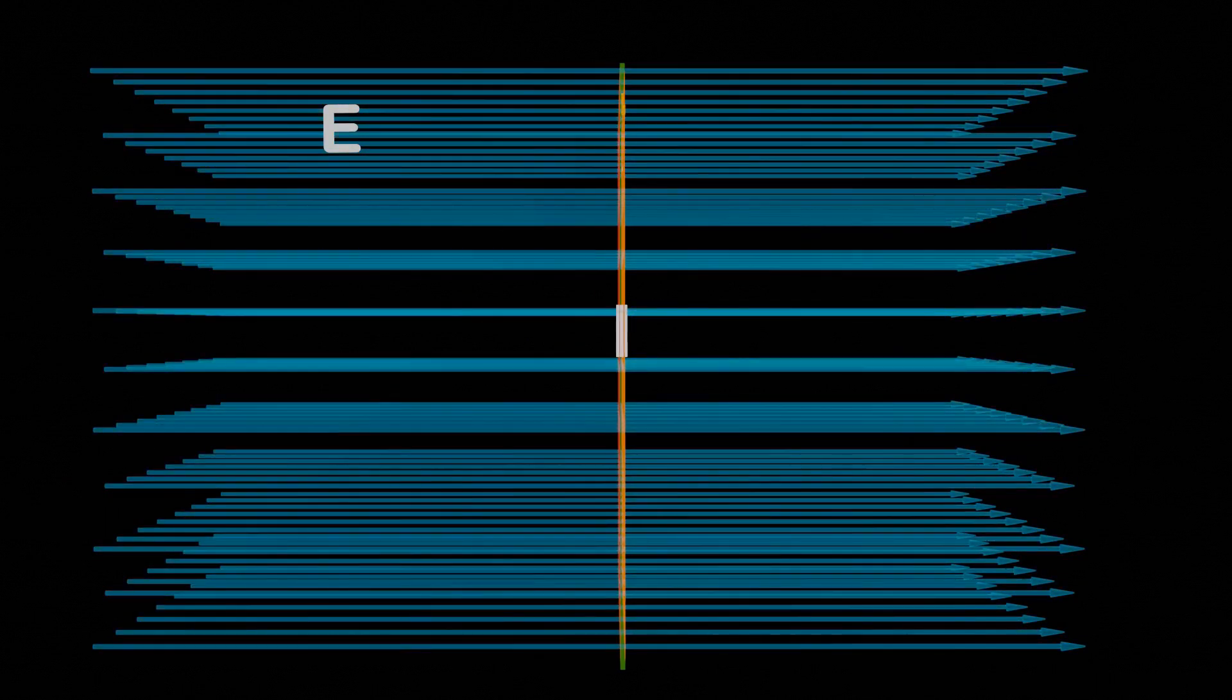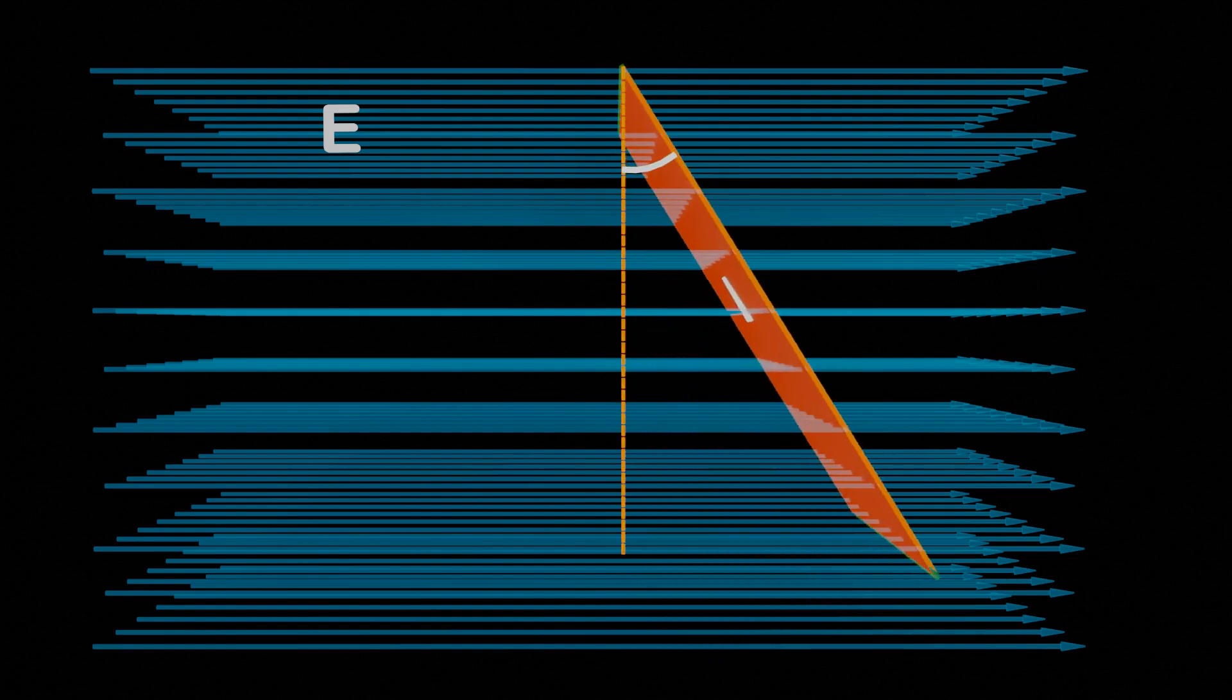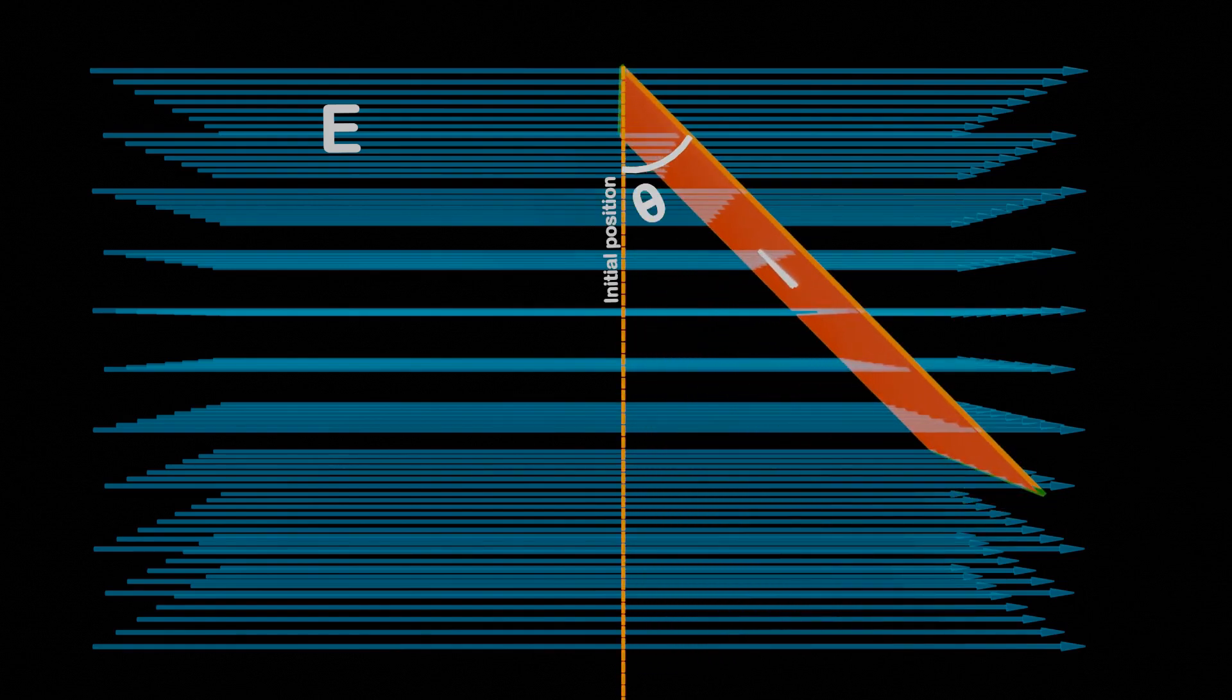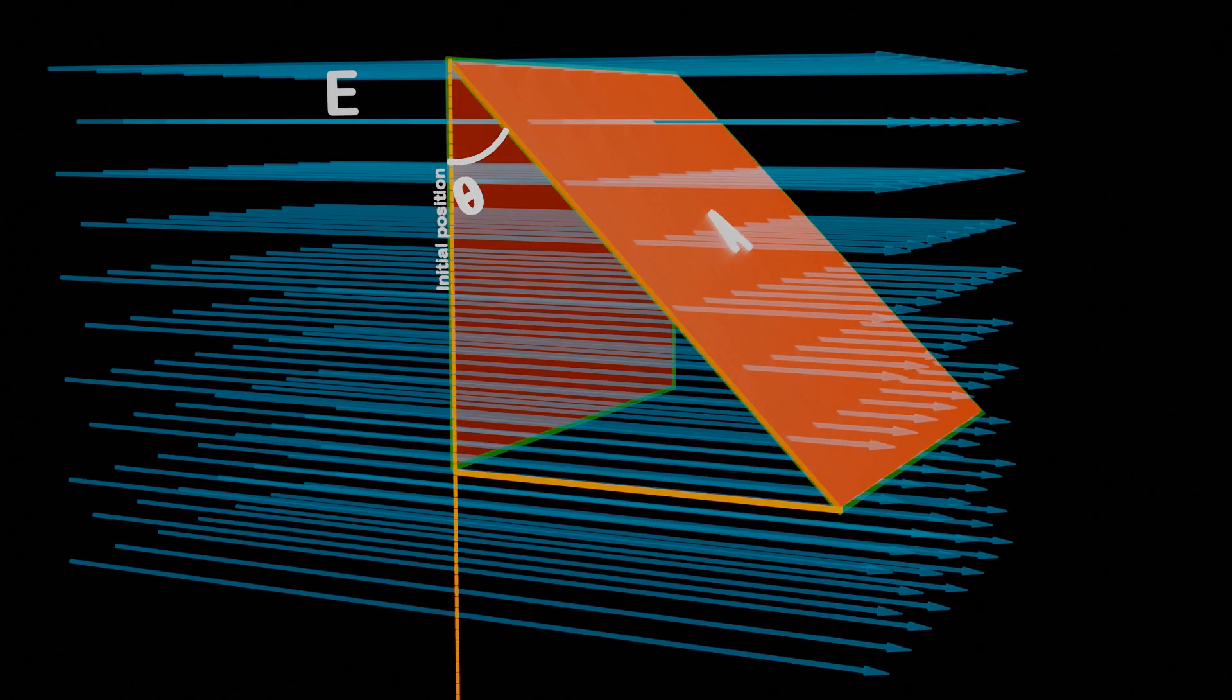However, as we start rotating the plane from its initial position by an angle theta, the number of electric field lines passing through the area decreases. If we draw a perpendicular line from tilted plane to its initial position, we get projected area or effective area through which the electric field lines are passing.